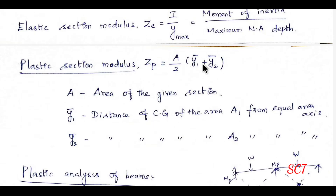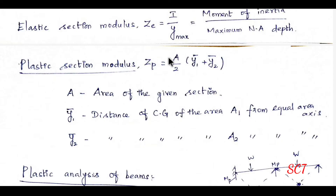The plastic section modulus Zp equals (A/2)(ȳ₁ + ȳ₂). Here, A is the total area of the section. We take the total area divided by 2, which gives the equal area. We take two sections above and below the equal area axis.